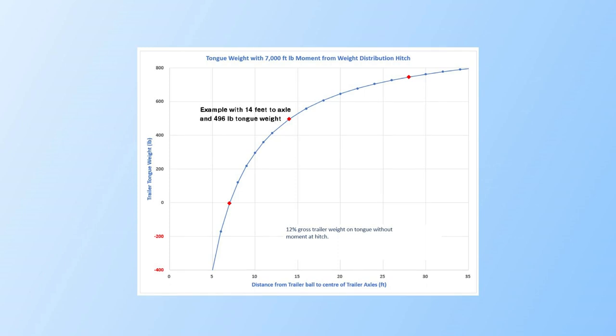For example, a trailer twice as long, say 28 feet to the axles, would have a tongue weight of 746 pounds, while a very short trailer with 7 feet to the wheels would have zero tongue weight with the same 7,000 foot-pound torque applied with the weight distribution hitch.